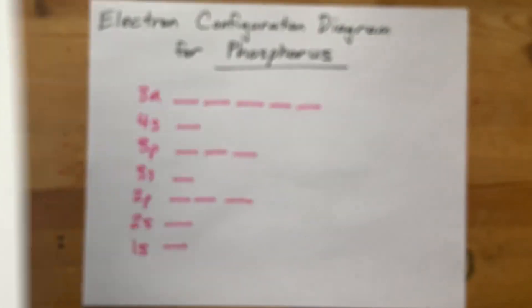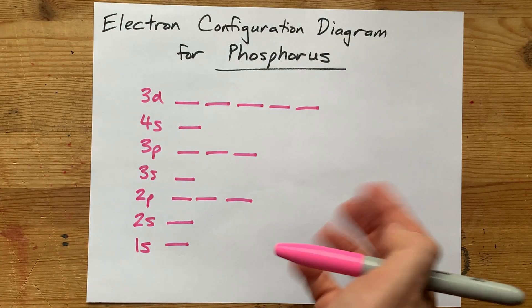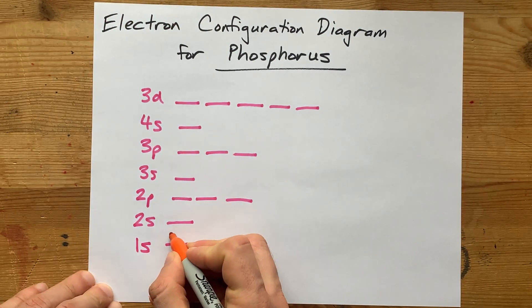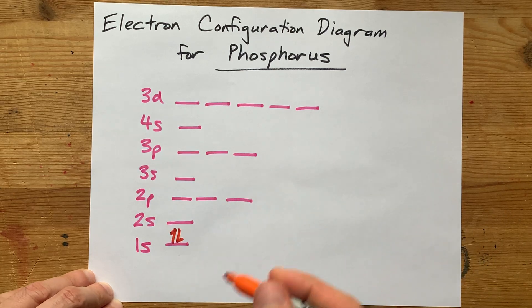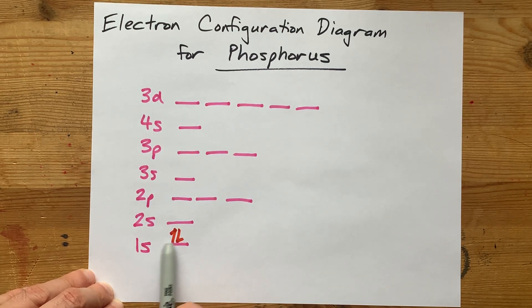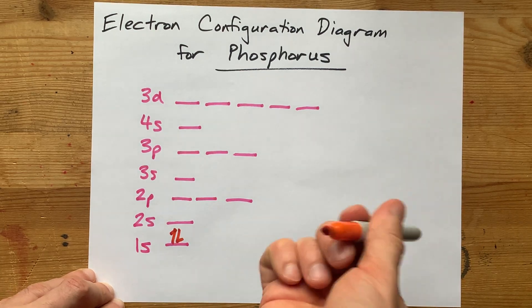Phosphorus, element number 15, needs 15 electrons total, so let's just start filling it up. You go from the bottom up, that's the Aufbau principle, and you have one up, one down in each of these orbitals. That's the Pauli exclusion principle.